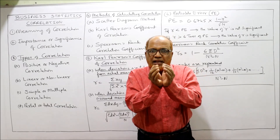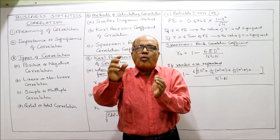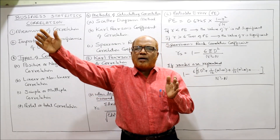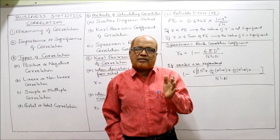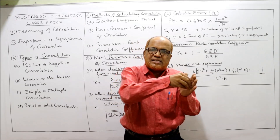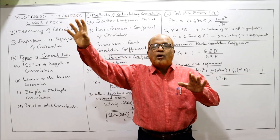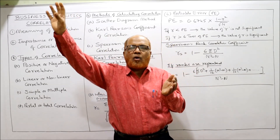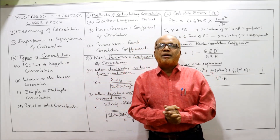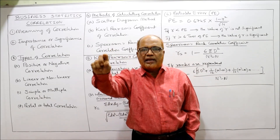Next is partial or total correlation. Partial means we consider only a few variables — for example, sales are affected by many factors but we select only three factors to find their effect on sales. That is partial correlation. If we take all factors into consideration to find the effect on sales, that is total correlation. In examinations you may be asked about positive/negative, linear/nonlinear, or the different types of correlation — you can write these.